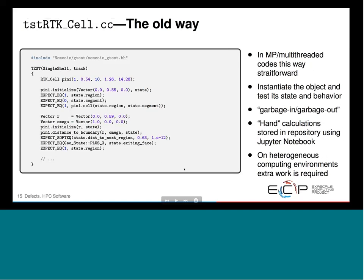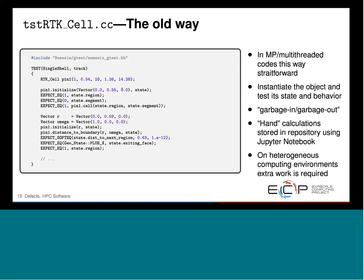In the pre-heterogeneous architectural environment with a simple MPI communication paradigm, this is part of what that test looks like using the Google Test framework. I make a simple test: make one of these objects, make a simple pin cell, initialize the vector, and then start testing conditions. I'm testing garbage in and garbage out. All of these are done through hand calculations that we also store in our repository using Jupyter Notebooks or various Python scripts.